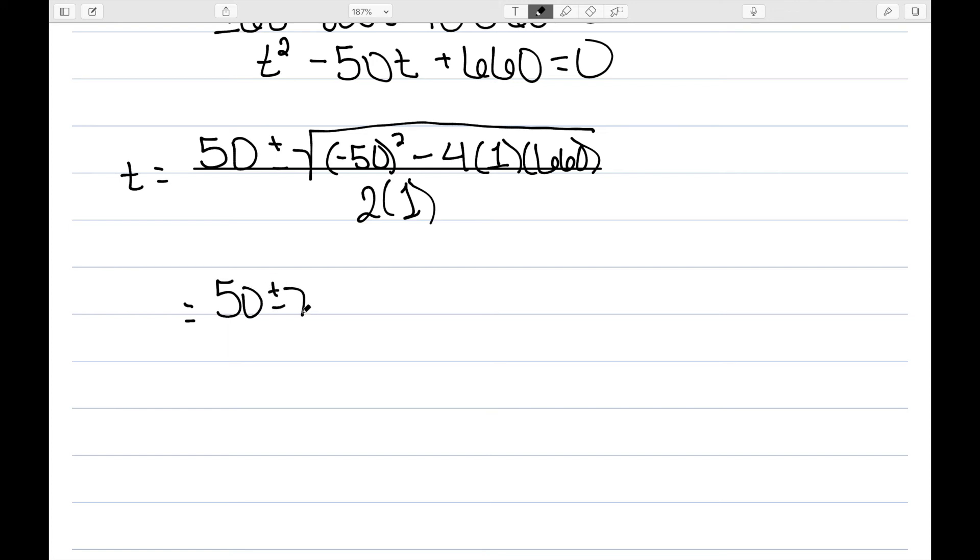As I'm simplifying this, 50 squared is going to equal 2500. And then 4 times 660 will be 2640, all over 2.